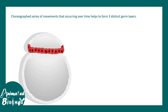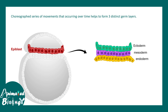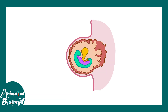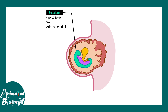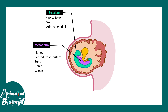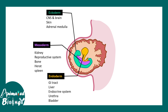Gastrulation is a choreographed series of movements which helps to form three important germ layers: ectoderm, mesoderm, and endoderm. Each of these germ layers is important for organogenesis. The ectoderm gives rise to the central nervous system, brain, skin, and adrenal medulla. The mesoderm gives rise to the kidney, reproductive system, bone, heart, and spleen. The endoderm gives rise to the GI tract, liver, endocrine system, urethra, and bladder.